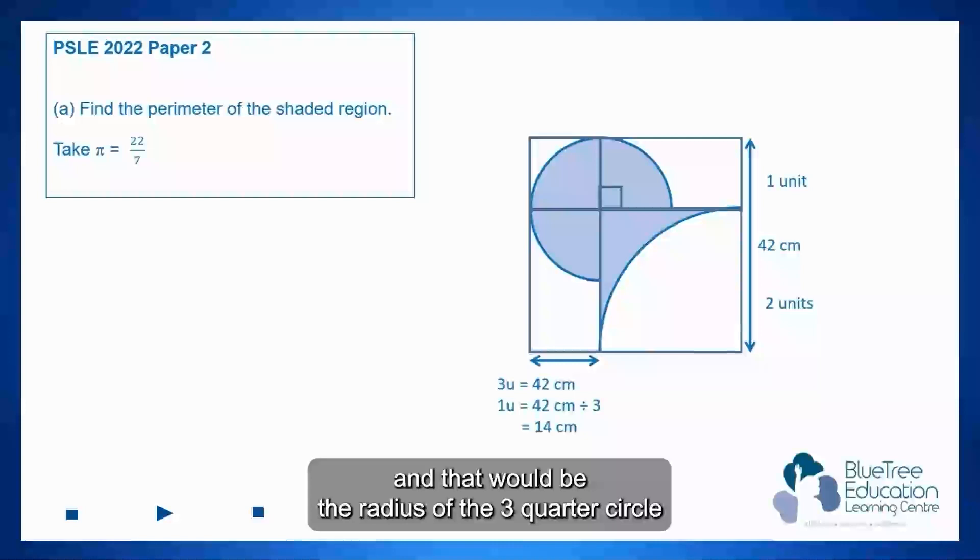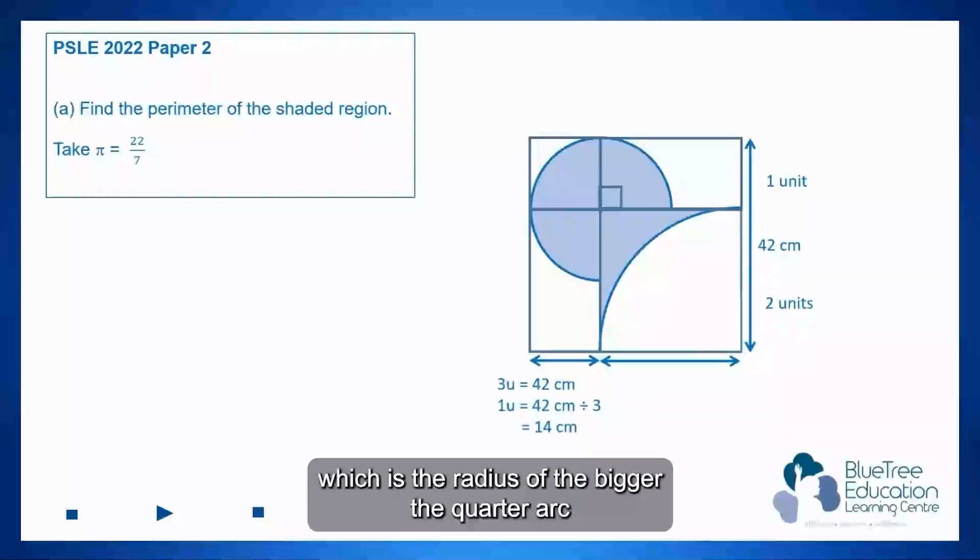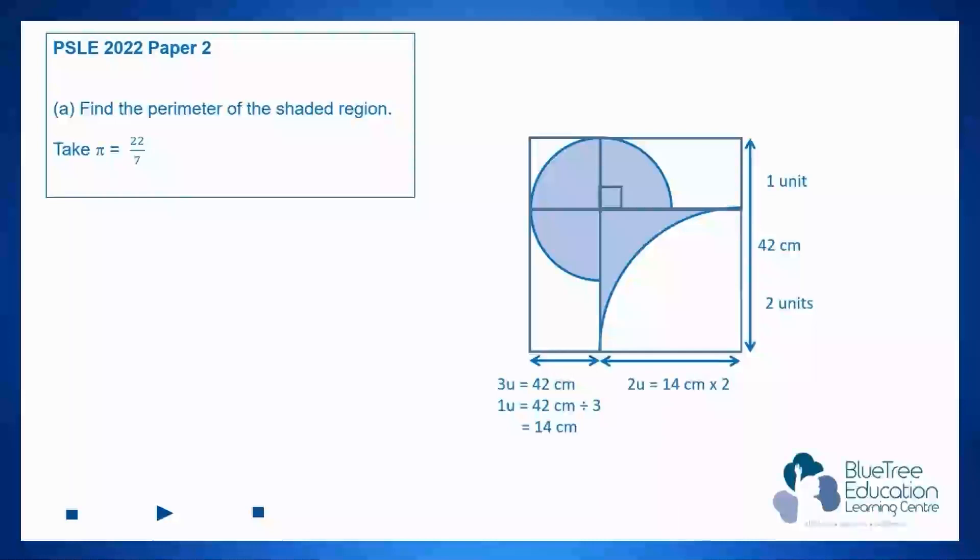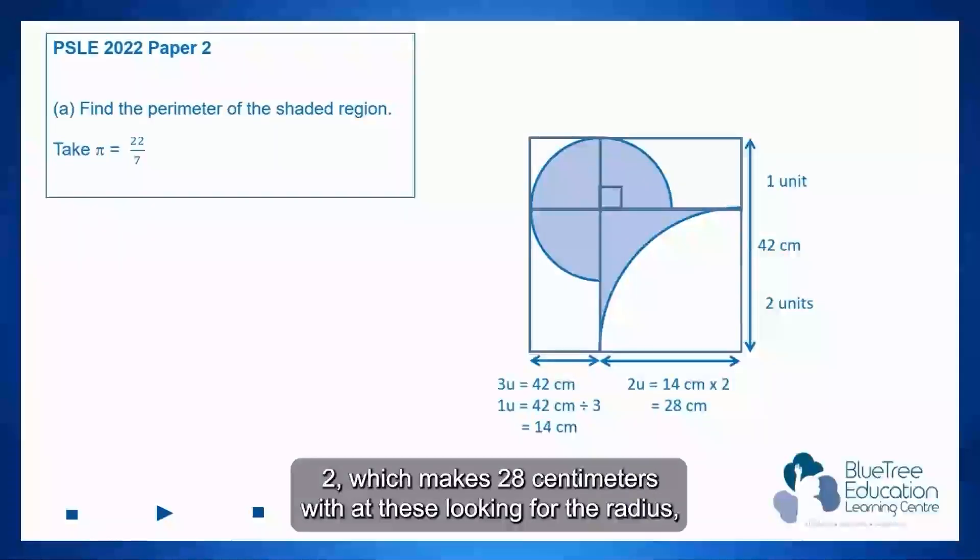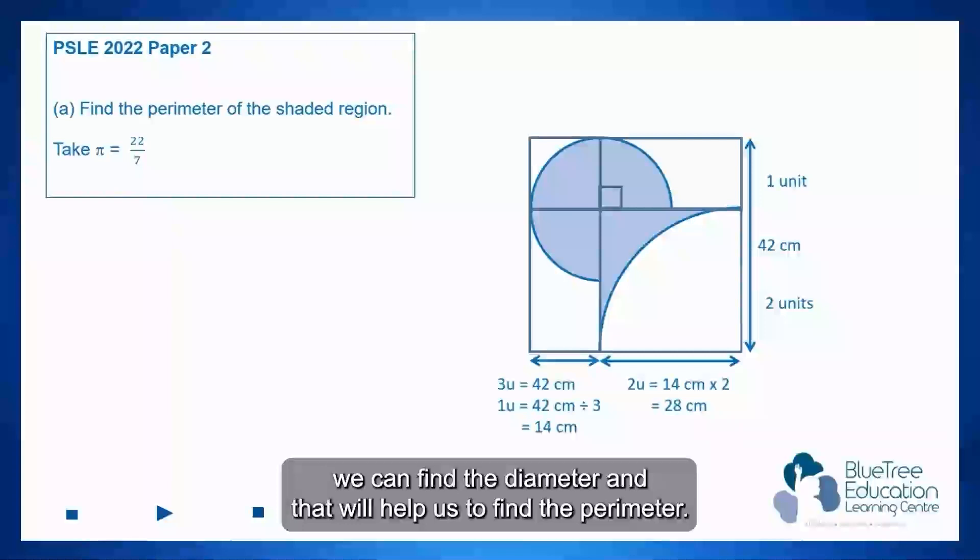That would be the radius of the three-quarter circle. And then as for the longer length over here which is the radius of the bigger quarter arc would be two units and that will be 14 cm times 2 which makes 28 centimeters. With the radius we can find the diameter and that will help us to find the perimeter.